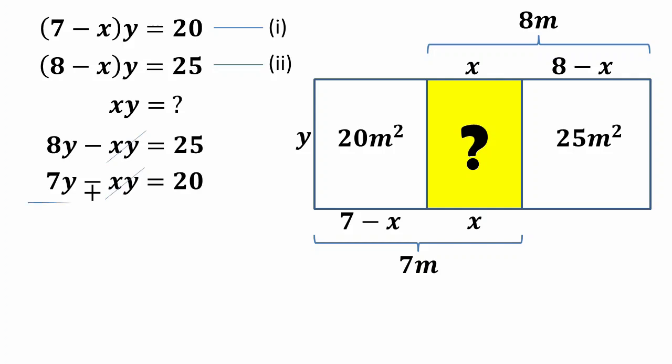Now put Y equals 5 in equation 1. We will get this. Dividing both sides by 5, we get this and X will equal 3. So the required area will be equal to XY equals 15.